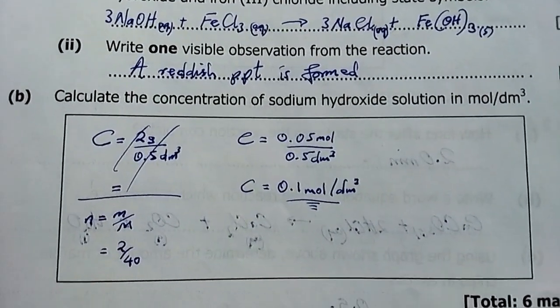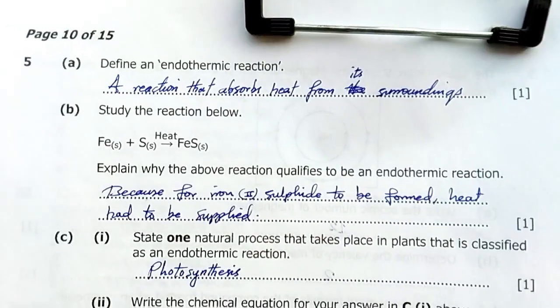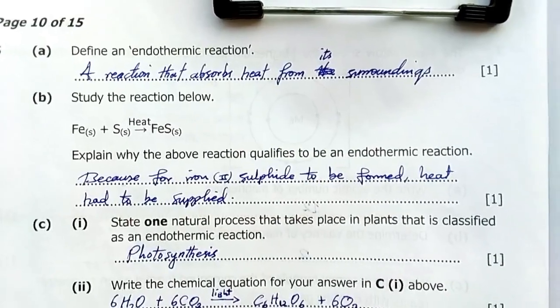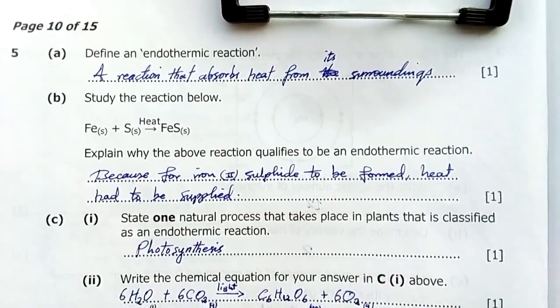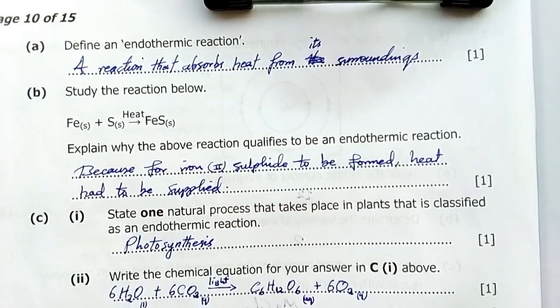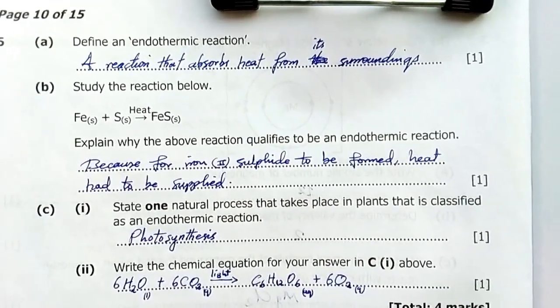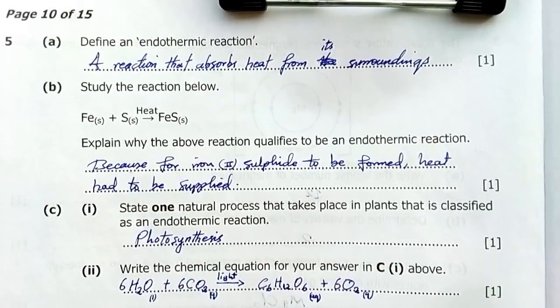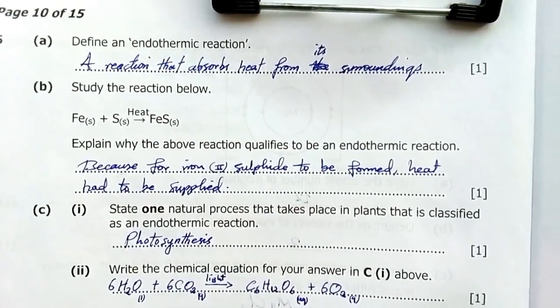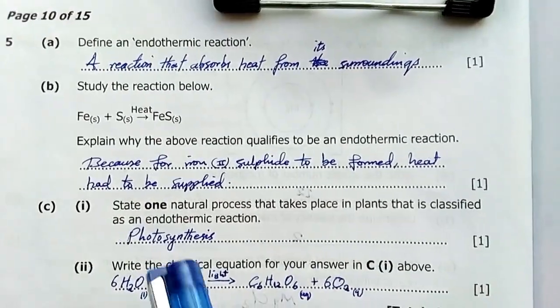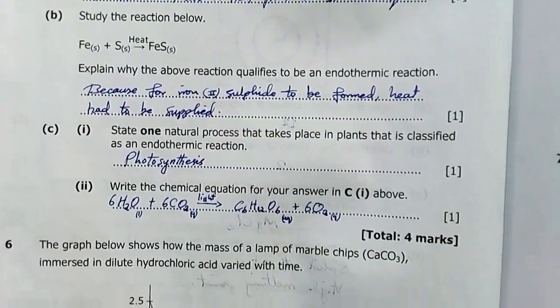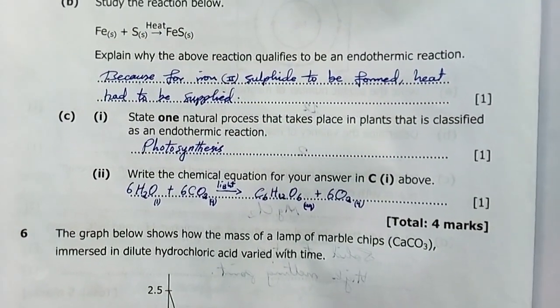Question 5: Define an endothermic reaction. A reaction that absorbs heat from its surroundings, or a reaction that requires the supply of heat for it to take place. Study the reaction below: iron plus sulfur gives iron sulfide. Explain why the above reaction qualifies to be an endothermic reaction. Because heat is supplied for the iron sulfide to be formed.